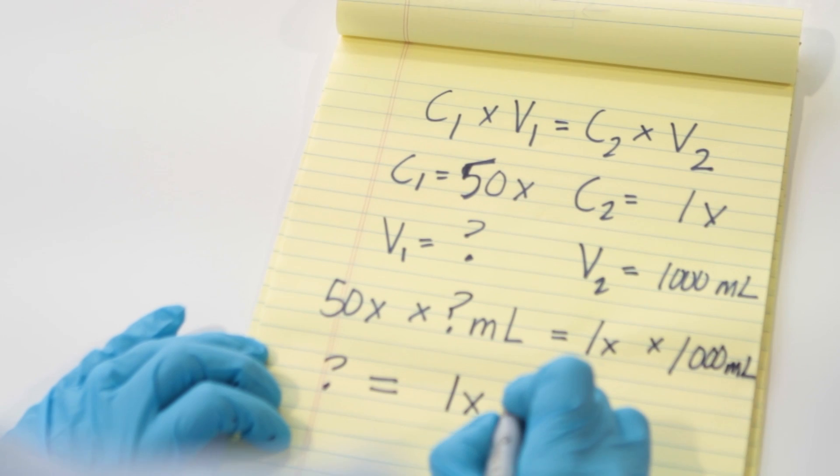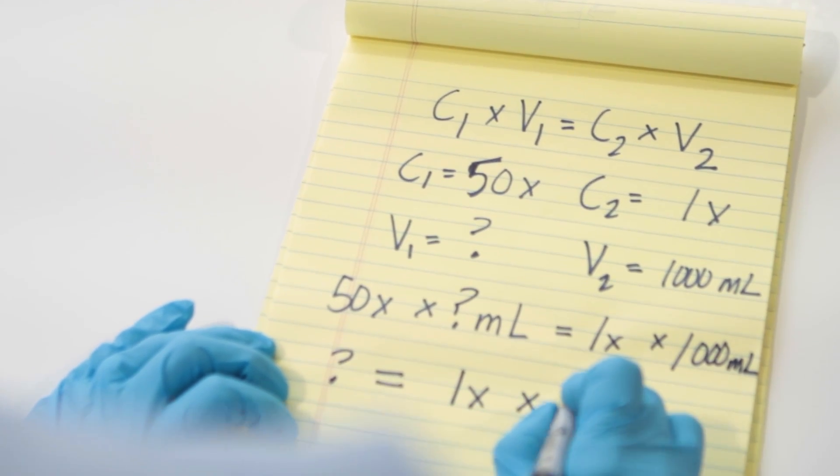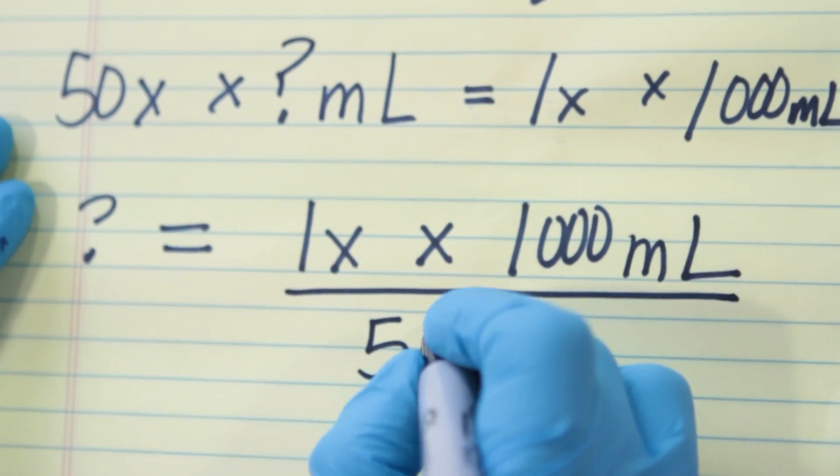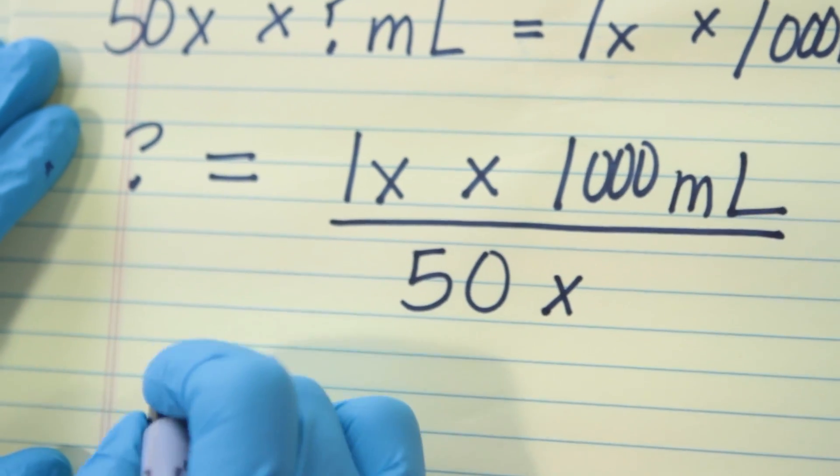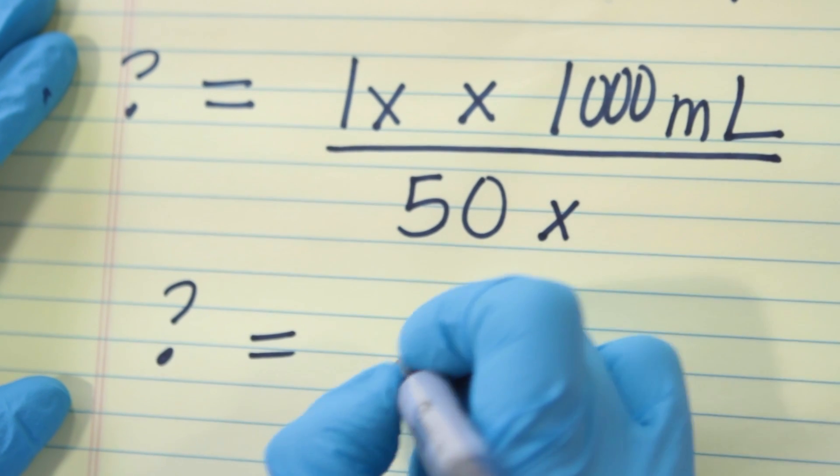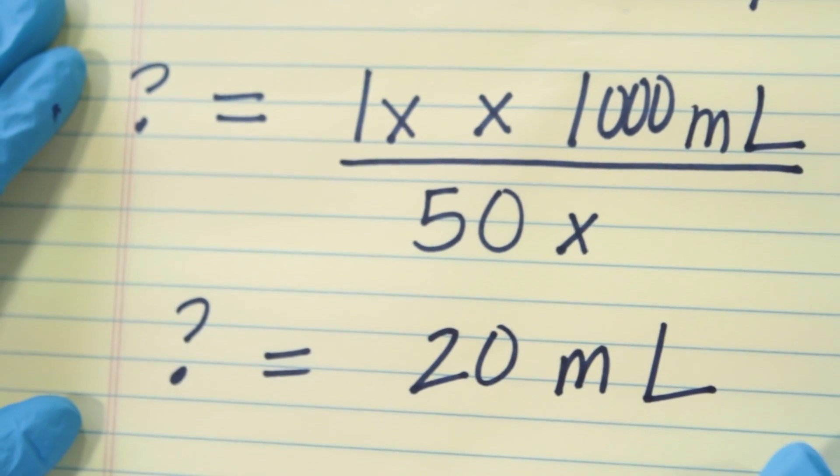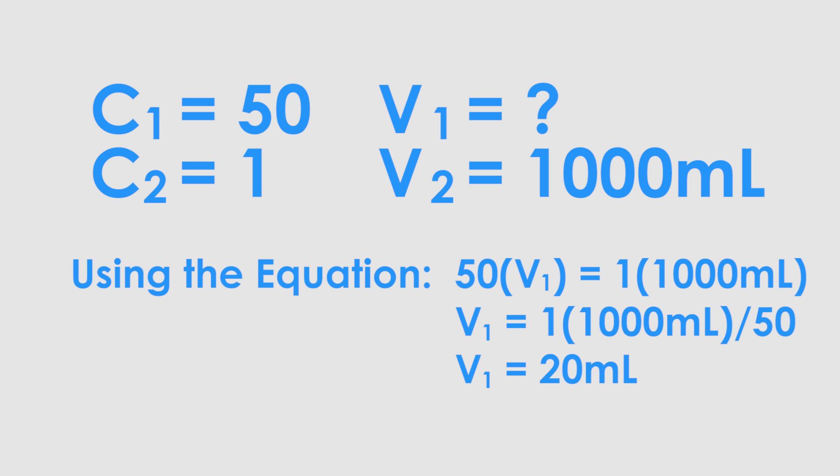In this example, the initial concentration you are working with is 50x. The final concentration of the solution is 1x, and the final volume will be 1 liter, or 1,000 milliliters. By solving for V1, we have calculated that 20 milliliters of 50x TAE are needed to prepare 1 liter or 1,000 milliliters of 1x TAE.